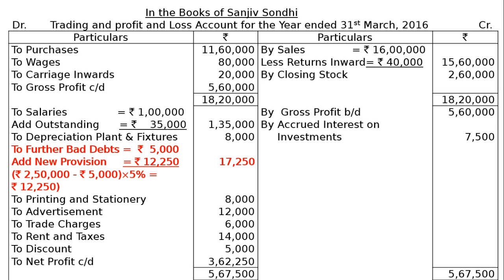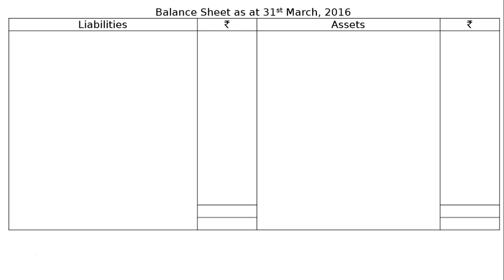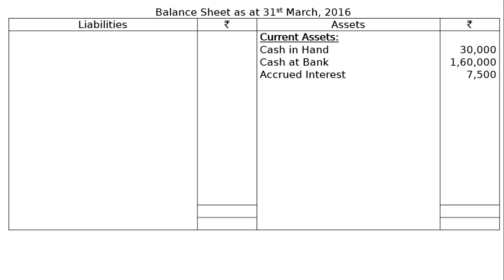This net profit of Rs. 3,62,250 is transferred to the capital account. We now prepare the Balance Sheet as at 31st March 2016, starting from the asset side — current assets. Cash in hand Rs. 30,000; cash at bank Rs. 1,60,000; accrued interest (from the adjustment) Rs. 7,500; bills receivable Rs. 50,000 in the final column.